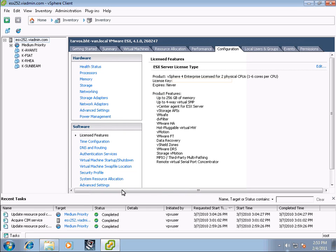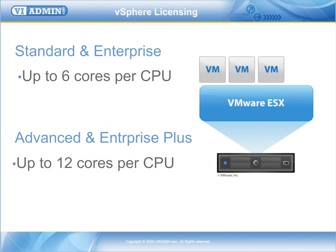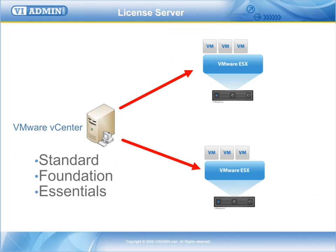If you have vCenter installed and all of your ESX servers are connected to it, you can have a single license configured inside the vSphere client, shared among all your VMware ESX servers. When you purchase vSphere license keys, you purchase them on a per CPU socket increment. For example, with vSphere Standard and Enterprise you get up to six cores per CPU socket, and with Advanced and Enterprise Plus you get up to 12 cores per CPU socket. vCenter 4 is still a separately purchased product and comes in three editions: Standard, Foundation, and Essentials.